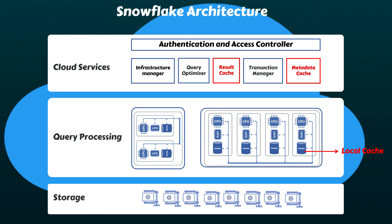In addition to the local warehouse cache for underlying data, Snowflake also caches the final result set of the query in the cloud services layer, before routing the query results to the user. When the same query or a subset of it is run by the same user, or another authorized user, the results are delivered directly from this result set cache. This cache usually stays for 24 hours from the last access, or until the underlying data in the storage layer changes.